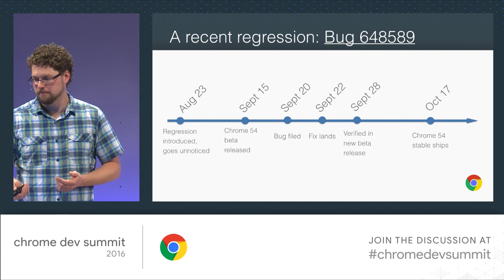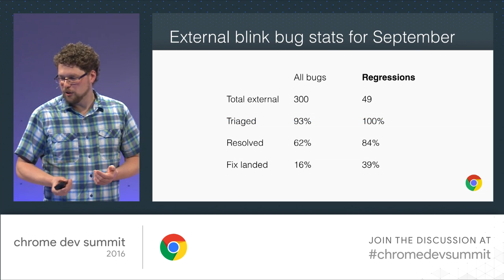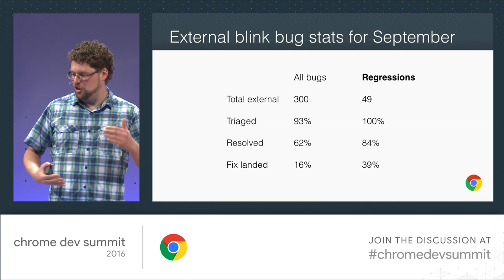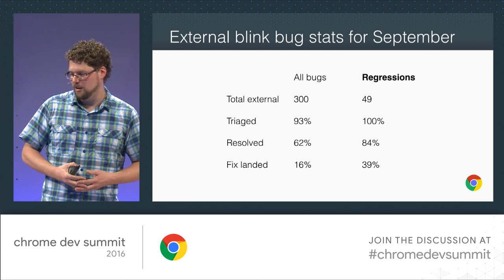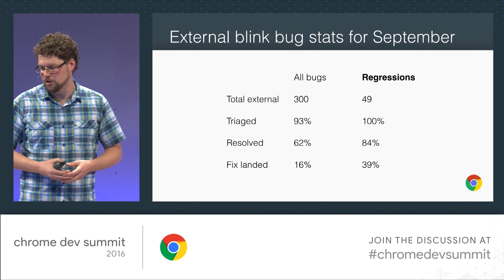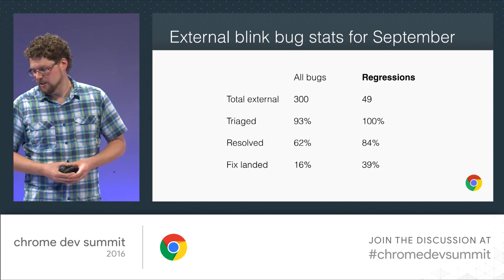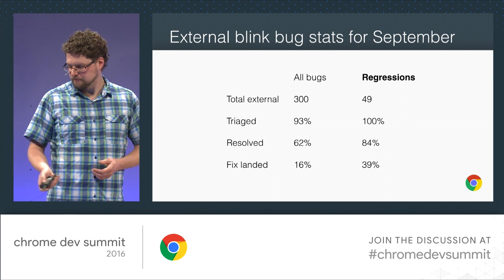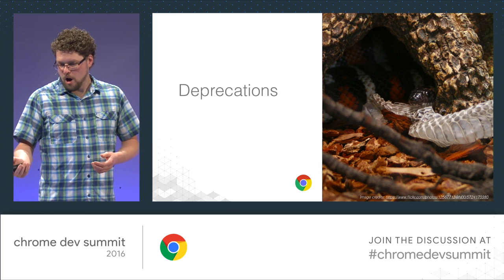This is how we want to see regressions handled, and it's fairly typical these days. Looking at regression-specific bug stats: 100% of regressions filed in September have been triaged, 85% have been resolved, and about 40% have had a fix landed.